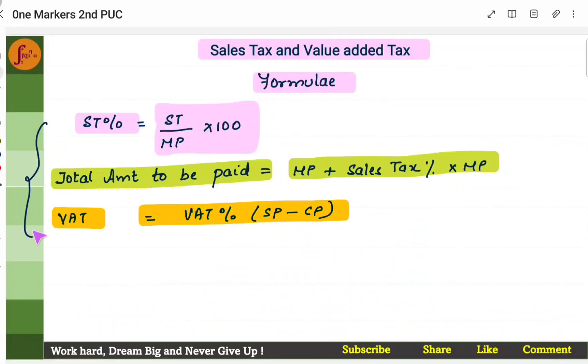Now these are the three key formulas that you may have to remember to solve the problems. Sales tax percent is nothing but sales tax by marked price into 100, and total amount to be paid is marked price plus sales tax percent into marked price, and VAT is nothing but VAT percentage into selling price minus cost price.